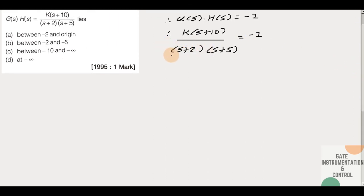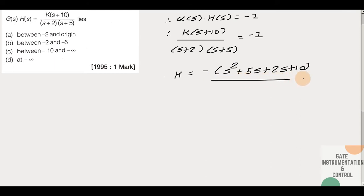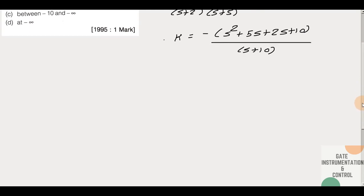Now we take the denominator terms (s+2) and (s+5) to the other side. So K is equal to minus 1 multiplied by (s+5)(s+2) divided by (s+10). Here we have got the value of K. Now we can find dK/ds by differentiating this value of K with respect to s.